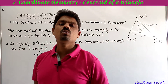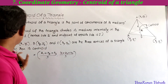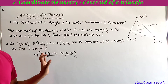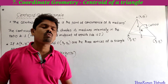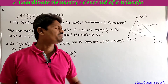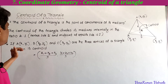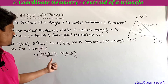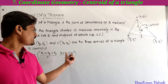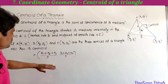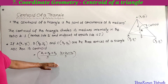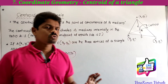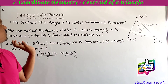If A(x1, y1), B(x2, y2), and C(x3, y3) are the three vertices of triangle ABC, then its centroid is equal to ( (x1 + x2 + x3) / 3 , (y1 + y2 + y3) / 3 ). This is the formula used to find the centroid of the triangle when the vertices of the triangle are given.